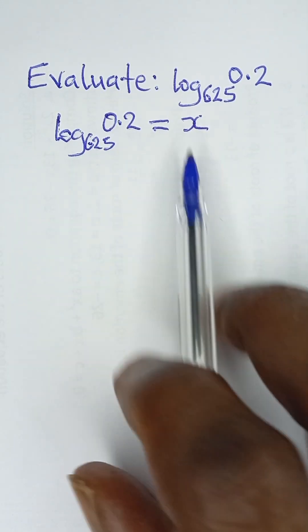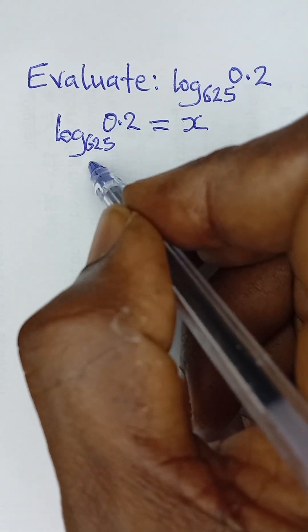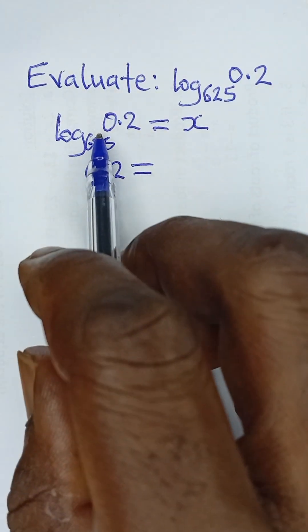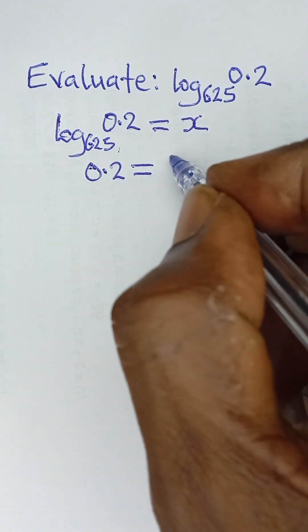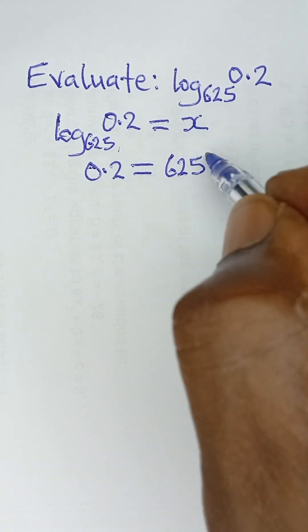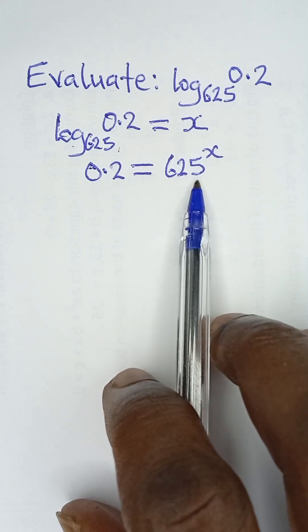Now in order to convert this logarithm to indices, what you simply need to do is to take this value which is 0.2 and then you say it to be equal to this base that we have here which is 625, and then raised to the power of our answer here which is x. That is how to convert from logarithm to indices.